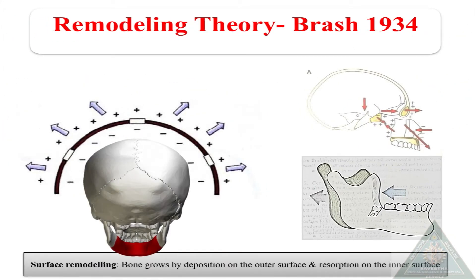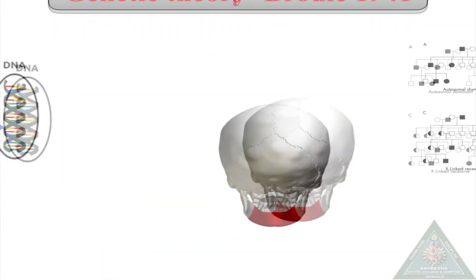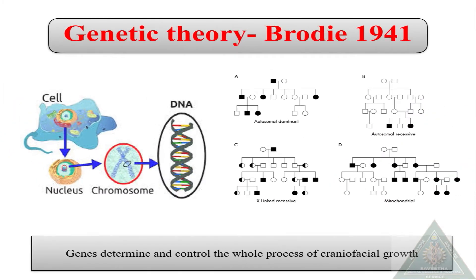The remodeling theory is one of the earliest theories, proposed by Brash in 1934. According to this theory, bone grows by apposition on the outer surface and resorption on the inner surface in order to maintain the thickness of bone. The growth of the jaws occurs due to growth on the posterior surface of the maxilla and the mandible. However, this theory could not explain the role of cartilage and sutures.